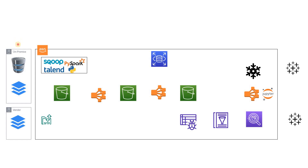Let's start from the complete left-hand side where our data is sitting in an on-premise system — for example, a database. In on-premise we also have some files which we need to ingest and process. To ingest database data into a cloud system, we can use Sqoop, which is a very powerful tool to ingest data from database tables like Oracle, MySQL Server, etc., and then load it into S3 or HDFS. Some companies use PySpark, some use Talend, and some use Python and Sqoop-based frameworks.